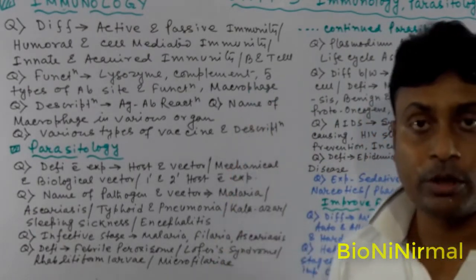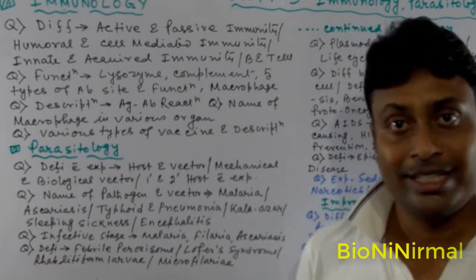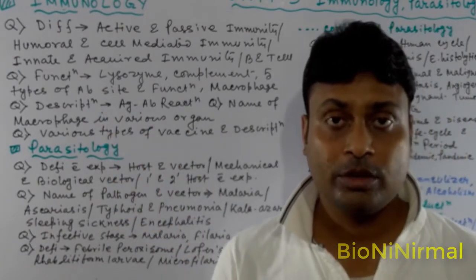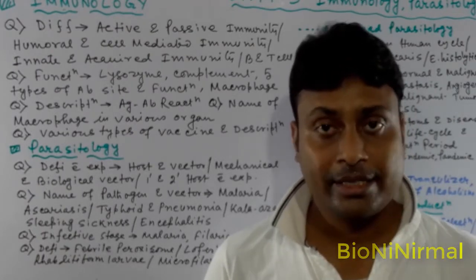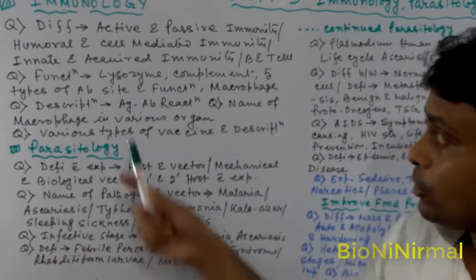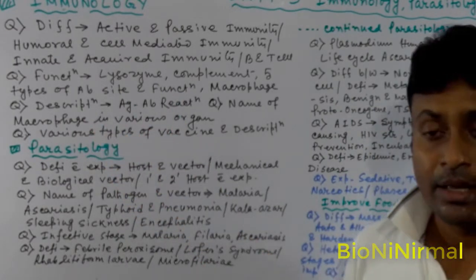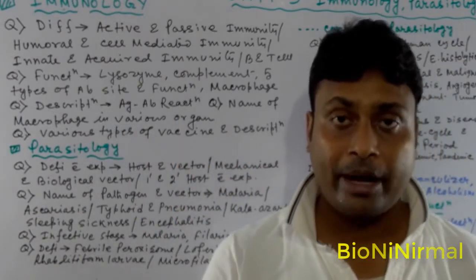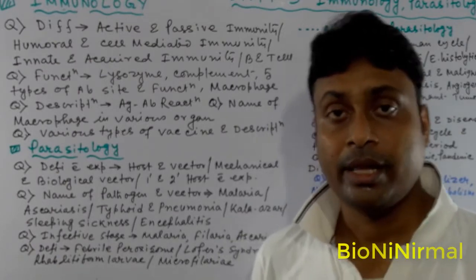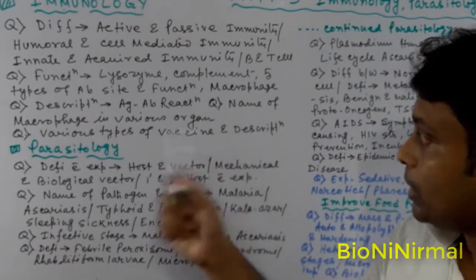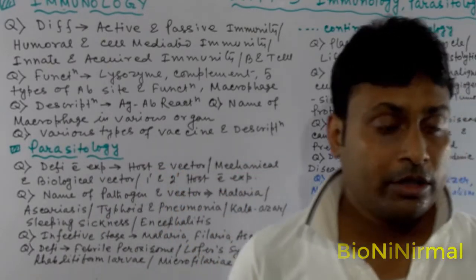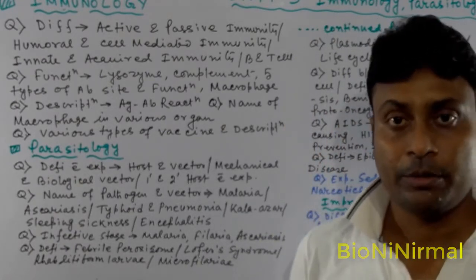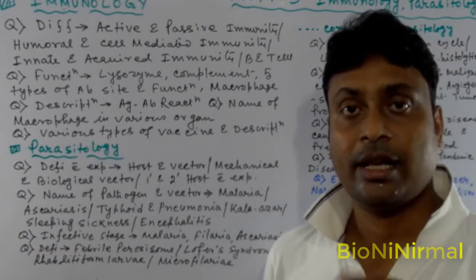Next, macrophages and phagocytosis. Then, description of the antigen-antibody reaction. The antibody structure is important — about 9 points. The antigen-antibody reaction, the stage of the virus, the name of macrophages in various organs, the various types of vaccines and their description, and active-acquired immunity — these are the main suggestions.